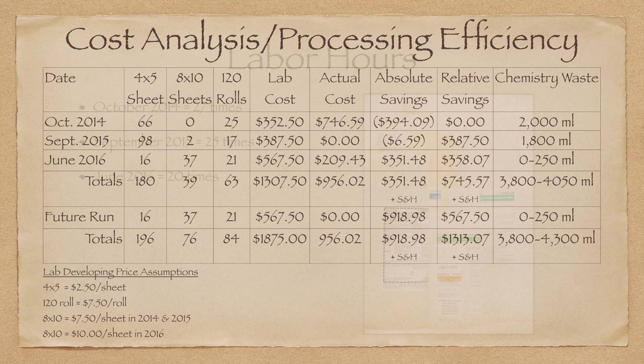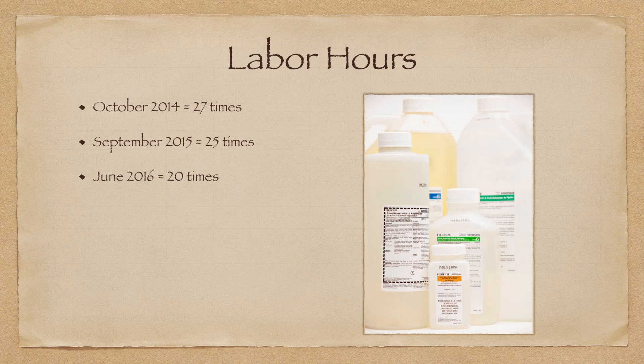Speaking of labor hours, each time I process a batch of film it takes me roughly 30 minutes to prepare everything — things like loading the film into the drums, filling my chemistry bottles with the appropriate amount of chemical, discarding waste chemistry from the previous run, etc. — and roughly 30 minutes to run the development process, for a total of 60 minutes per run. To put that into perspective, I've run the E6 process a total of 72 times over three separate occasions, which means that I put in 72 hours of my own labor. For me, it's a labor of love and it keeps the quality assurance of this process up to me.